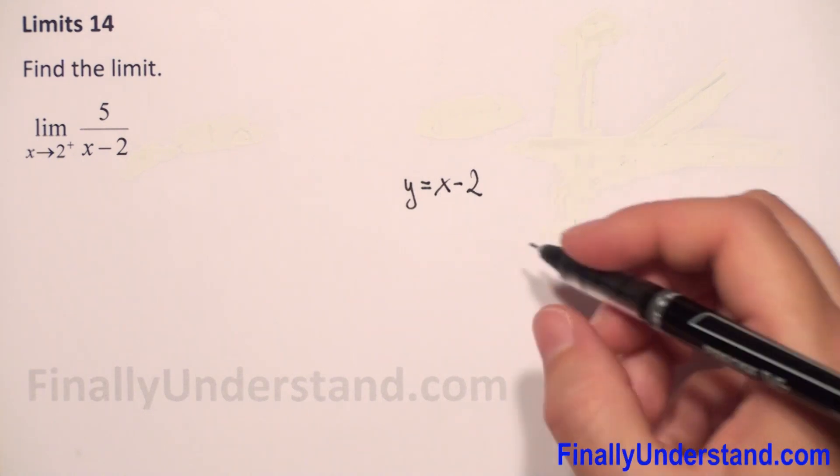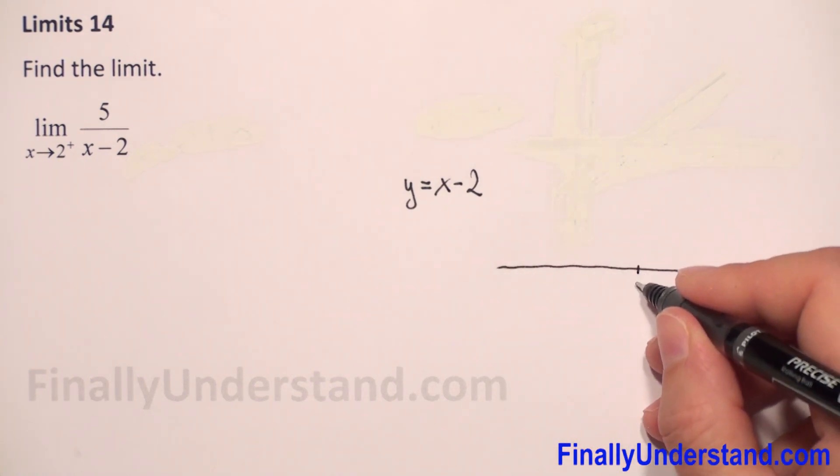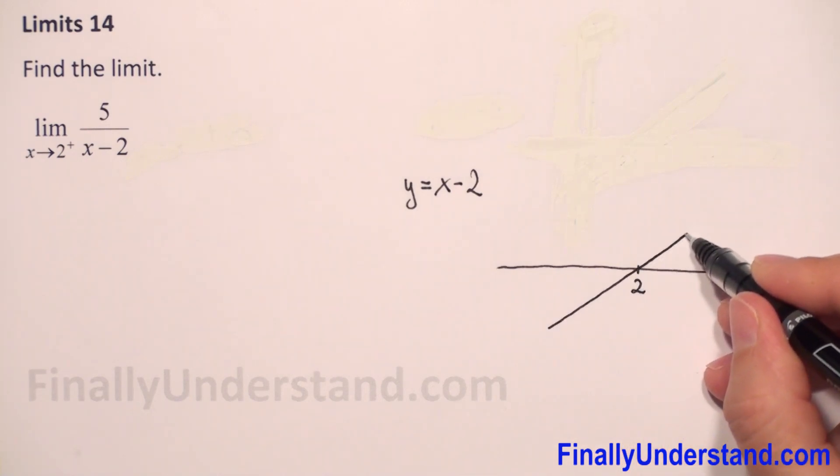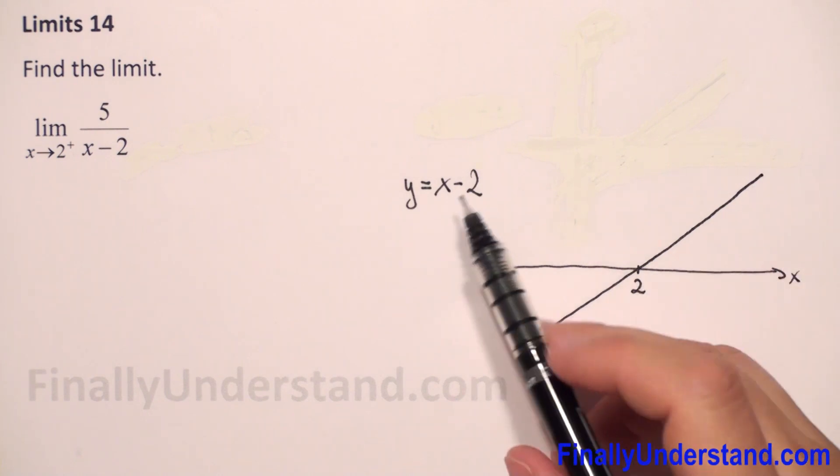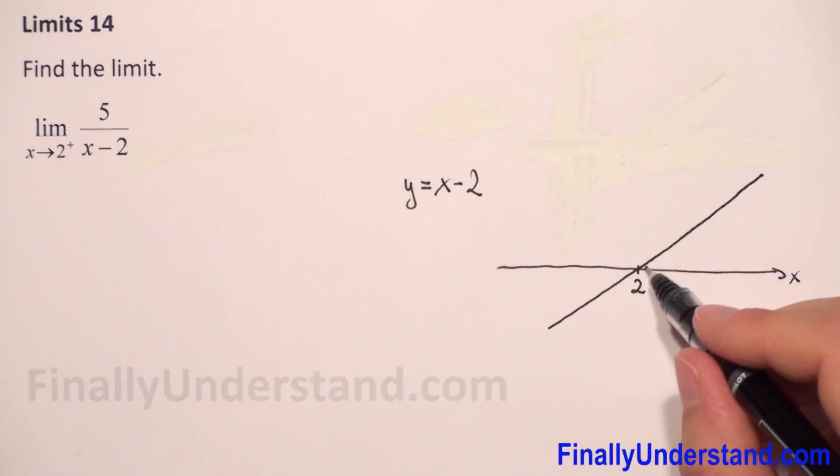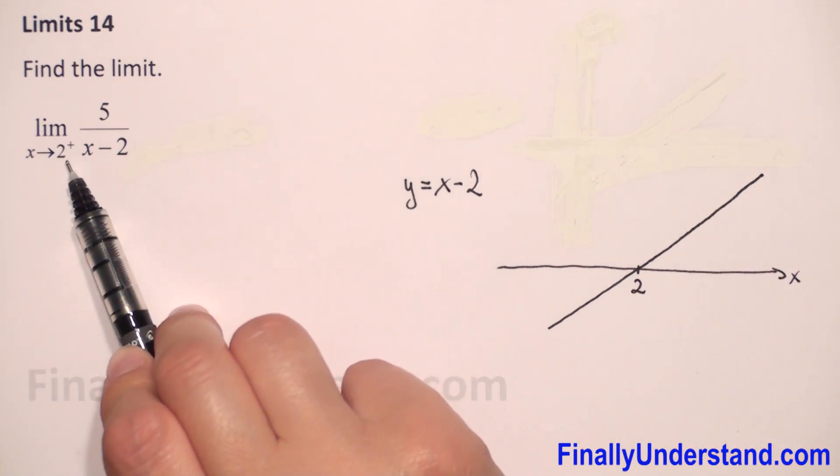So let me draw the x-axis. We pass x at 2, we are going up because this coefficient before x is positive, so this line is increasing. So now we are going to 2 from the right side.